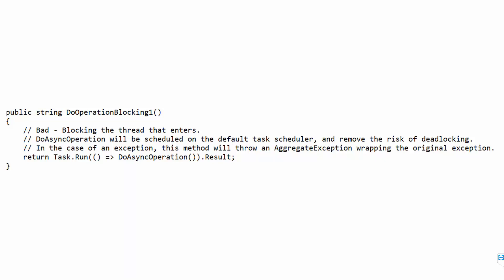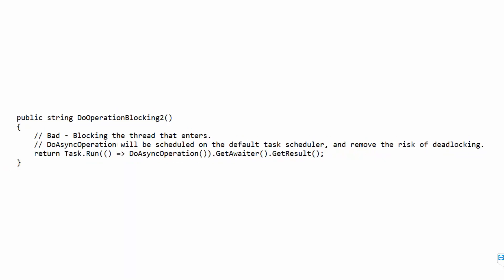The first attempt is Task.Run(() => DoAsyncOperation()).Result — it's blocking the calling thread. It's somewhat smart in that DoAsyncOperation is removed from the default scheduler by running on the thread pool, eliminating the deadlock. But there's still .Result, which can throw an AggregateException. Option two uses GetAwaiter().GetResult() inside Task.Run — this avoids AggregateException but you're still blocking a thread pool thread and the calling thread.